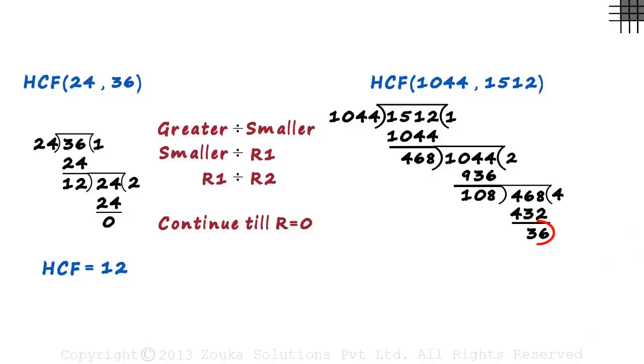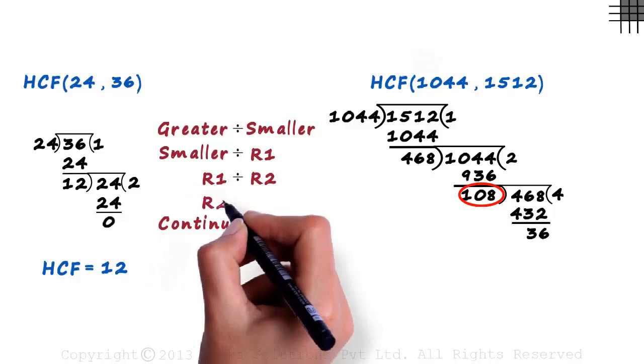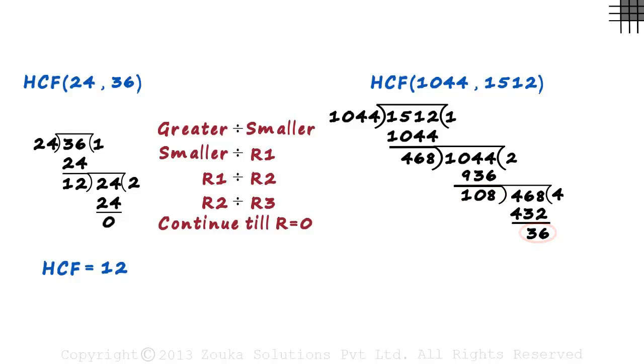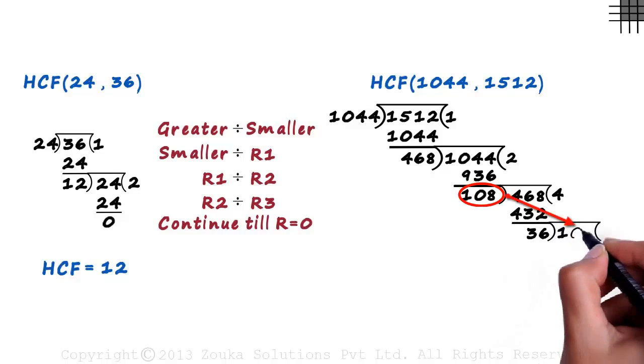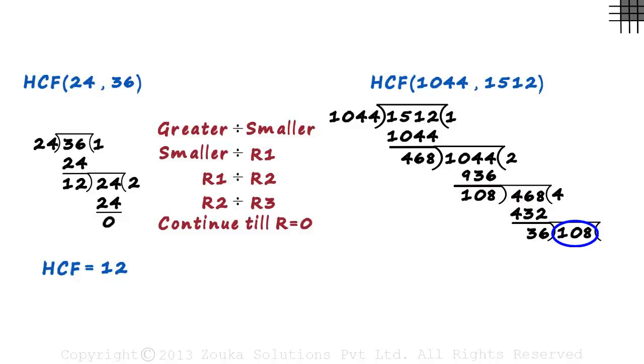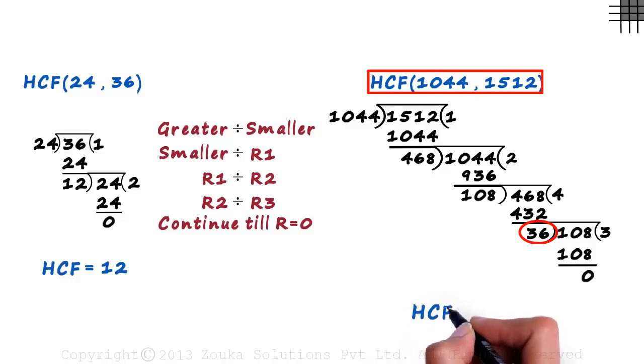The remainder is still not zero. The next step is simple. It will be R2 divided by R3. This is the second remainder, and this is the third remainder. Hence we write the second remainder, which is 108 here. We are dividing R2 by R3. 36 times 3 is 108, and finally we get the remainder as 0. That's where we stop. And the final divisor becomes the HCF. Hence the HCF of 1044 and 1512 is 36.